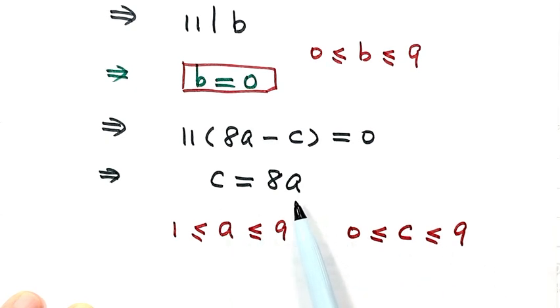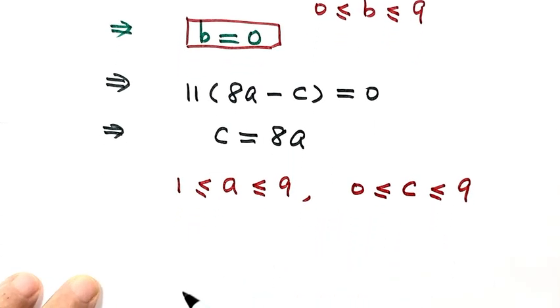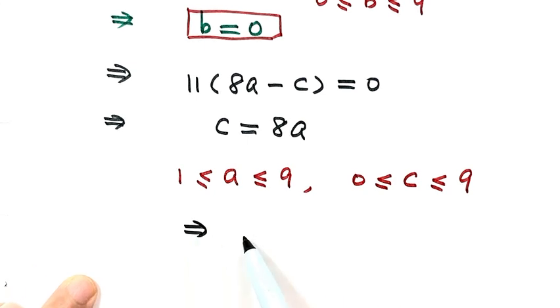Because the largest number for C is 9, if we put anything for A bigger than 1, then the product will be more than 9. So A can only be 1.